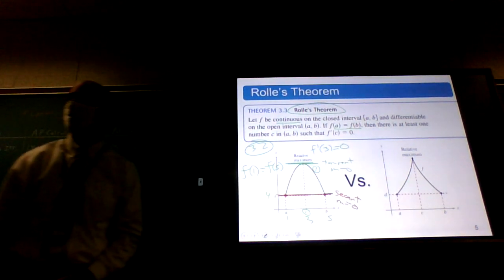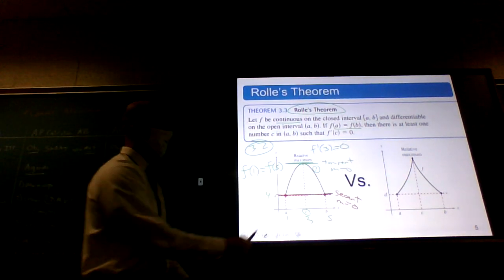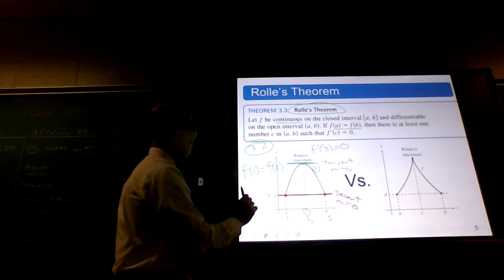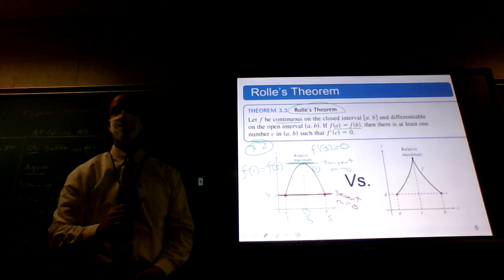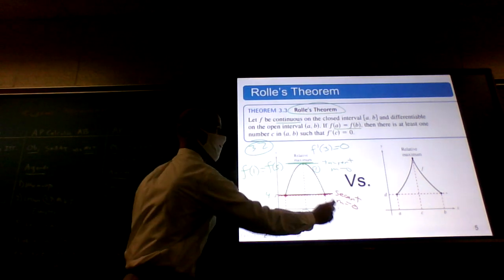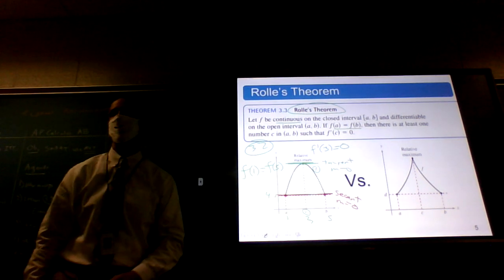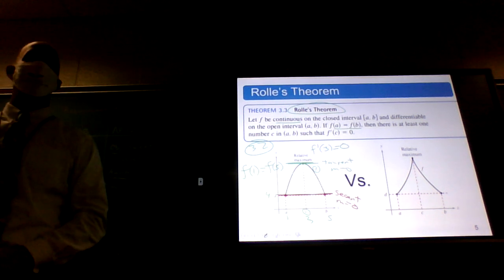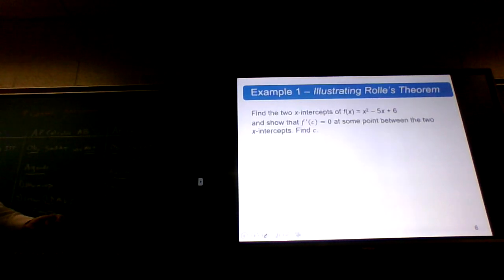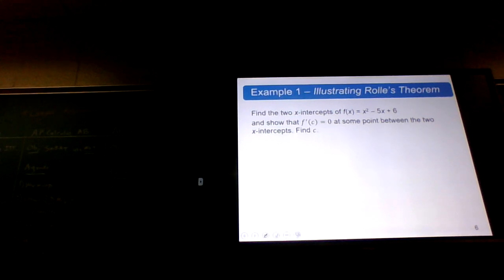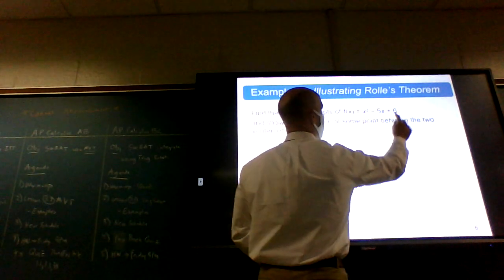Here's what the theorem says. The theorem is saying is if you have a function that's continuous and differentiable, and we know that the average rate of change, that's the slope of the secant line, if the average rate of change is 0, then somewhere between those other two guys, the instantaneous rate of change also has to be 0. Let's look at an example of that.